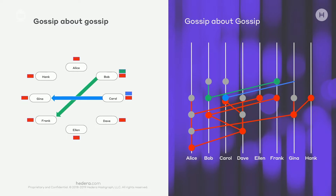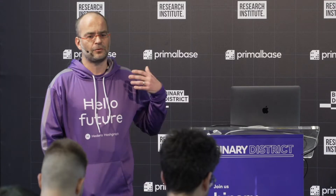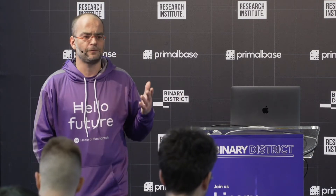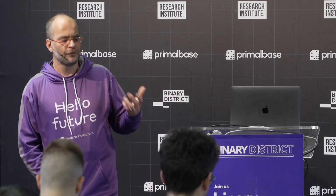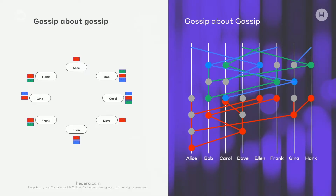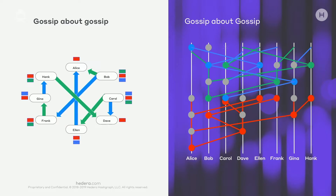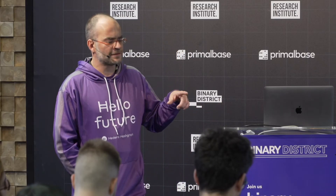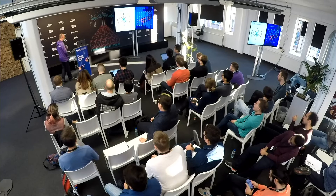If Bob and Carol at the same time want to tell the network something, they can do that — there is no assumption on synchronicity or time delays within the network. It's entirely possible for Bob and Carol to send a message at exactly the same time to the rest of the network; they gossip that message to everybody else. You'll notice the colored envelopes are not necessarily in the same order for all nodes — they've reached nodes at different times and potentially in a different order. But we're still able to derive the order in which they entered the network from an outside party via virtual voting.